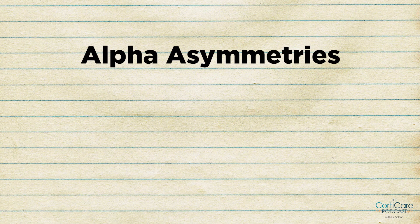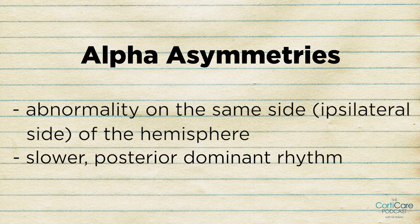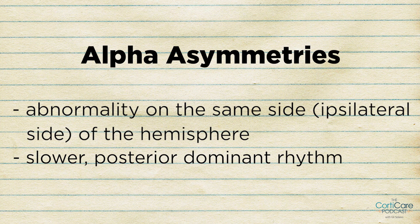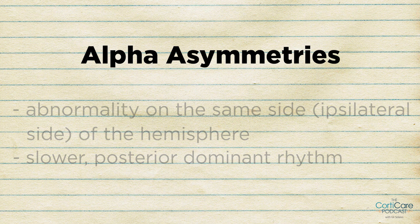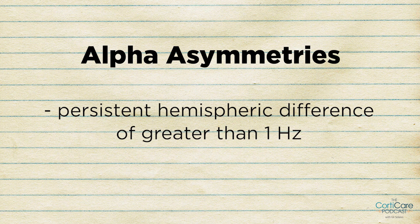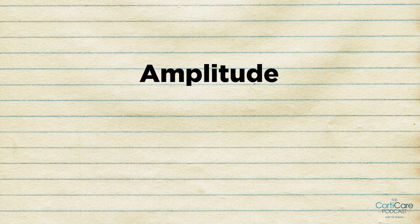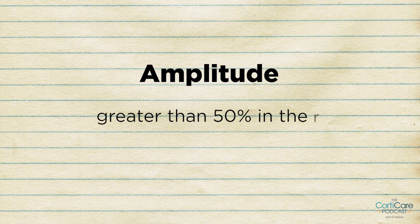To recap alpha asymmetries: they depict an abnormality on the same side, or ipsilateral side, of the hemisphere, and involve a slower posterior dominant rhythm. A persistent hemispheric difference of greater than one hertz in alpha rhythm is considered abnormal. When it comes to amplitude, a persistent amplitude asymmetry of greater than 50% in the right hemisphere should also be regarded as abnormal.